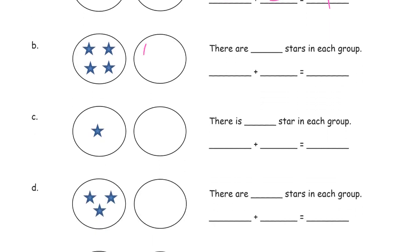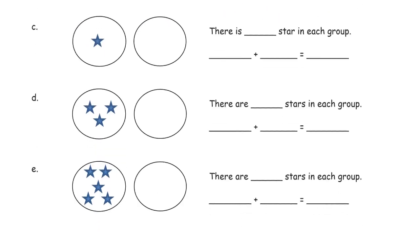There are two stars in each group. Two for the first group, two for the one I drew, four stars. There are, let's see, we need four stars in each group. And that's two fours. We call them doubles. This is what doubles are. Four plus four, eight. And we have one star in each group. One plus one is two.